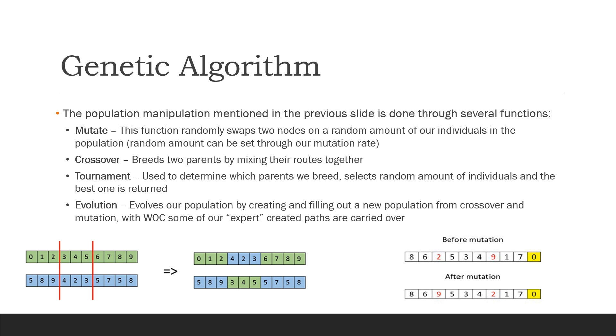Crossover breeds two parents by mixing the routes together, which can be seen at the bottom left. It takes a chunk of the route and swaps it with a chunk of the other route to give us a child route, which is then passed to the next generation. The tournament function is used to determine which parents breed. We select a number of individuals, and the best individual out of that tournament will be parent number one. For tournament number two, the best individual will be parent number two, and then we breed those to get smarter children. The tournament size I used was seven.